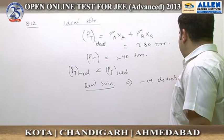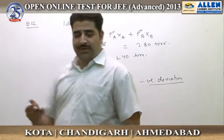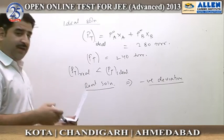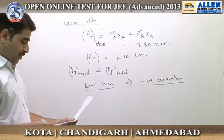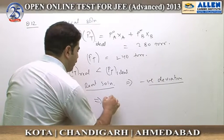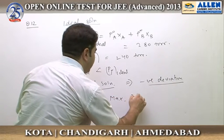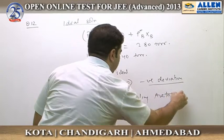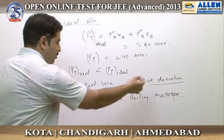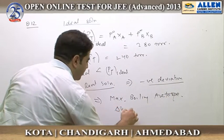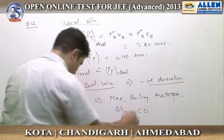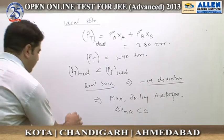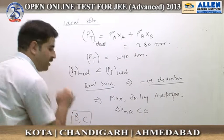Since this solution shows negative deviation from Raoult's law, the intermolecular forces in this solution are going to be stronger than in the pure components. It is going to form a maximum boiling azeotrope, and delta V of mixing is going to be less than zero. Based on all these points, options B and C are correct.